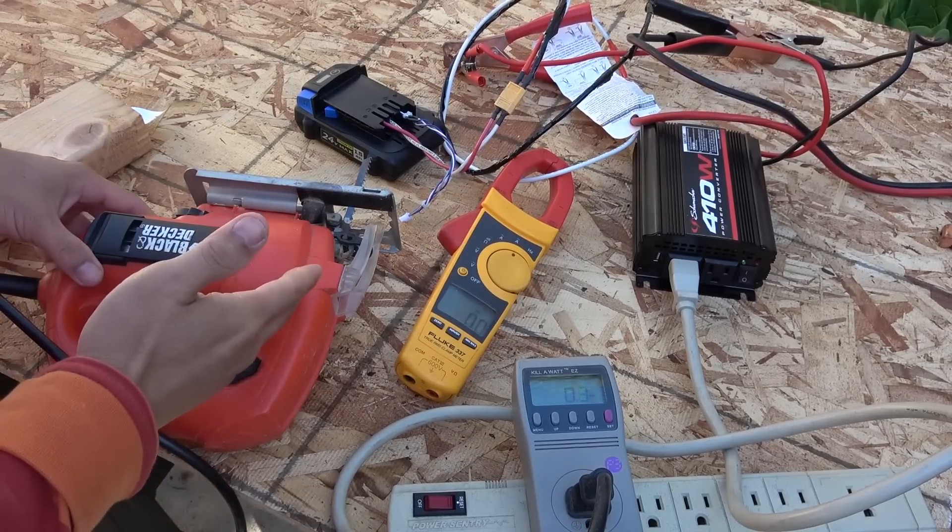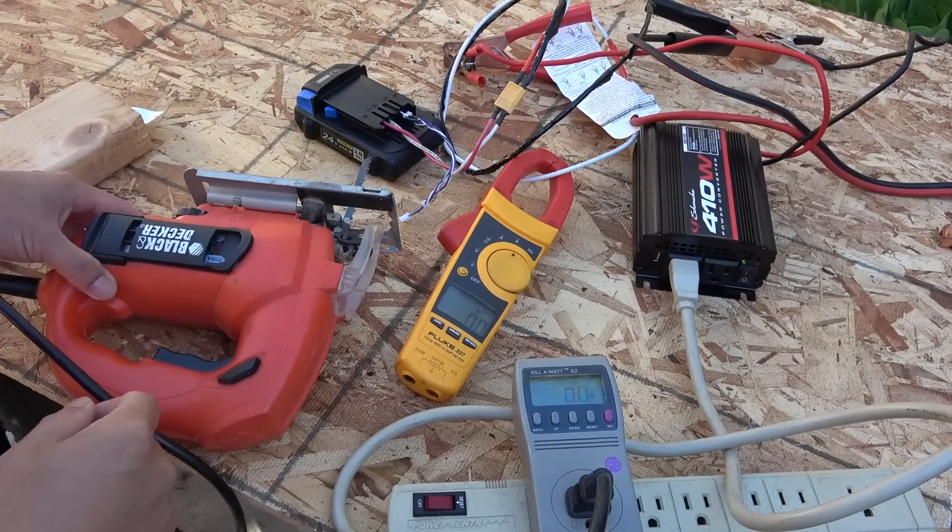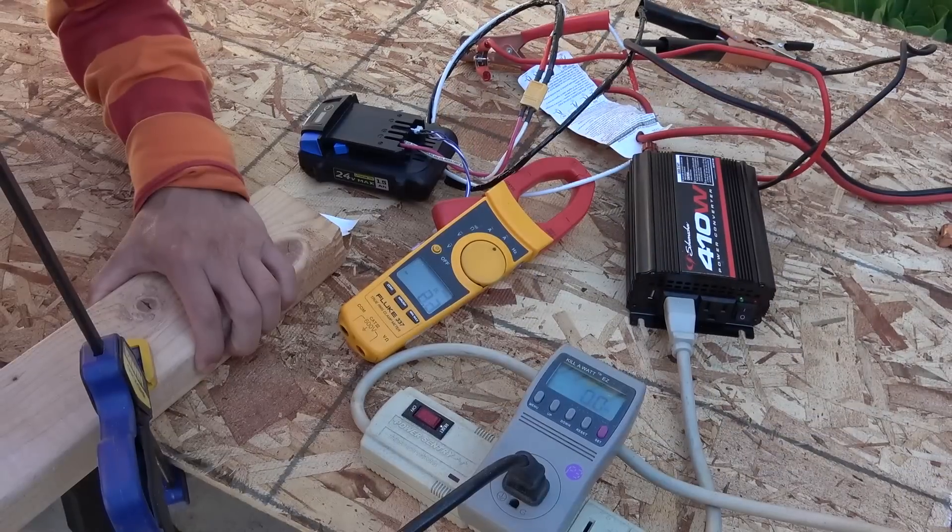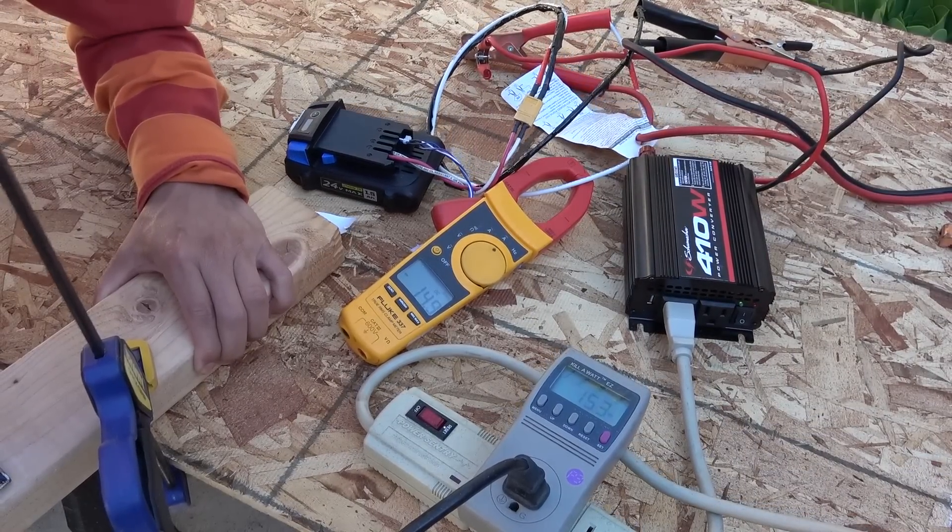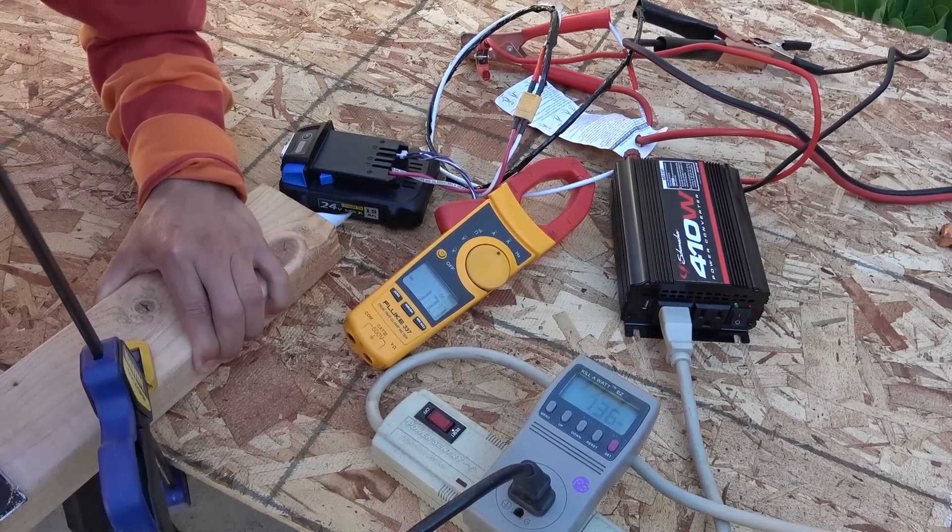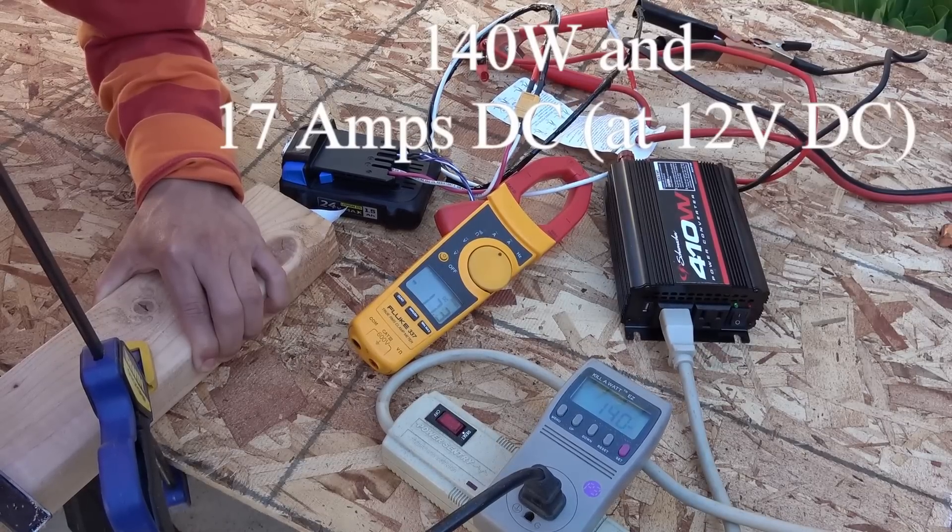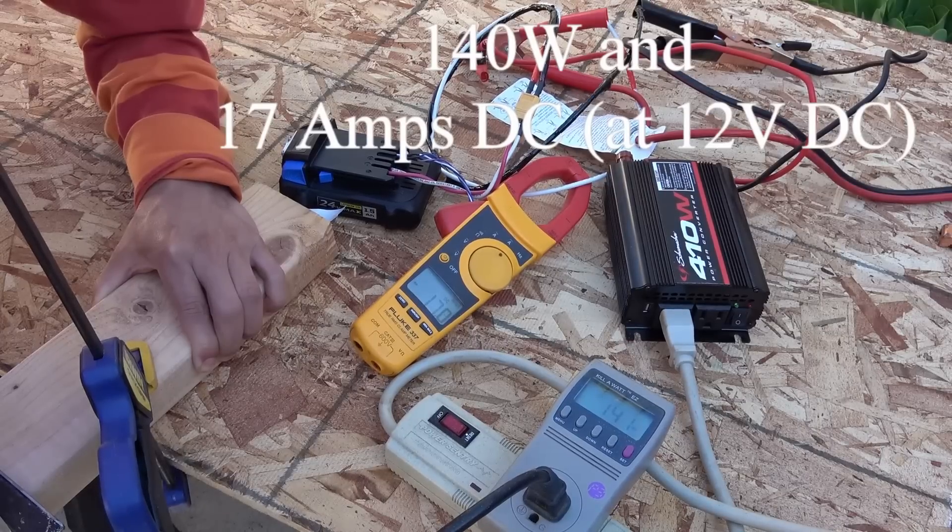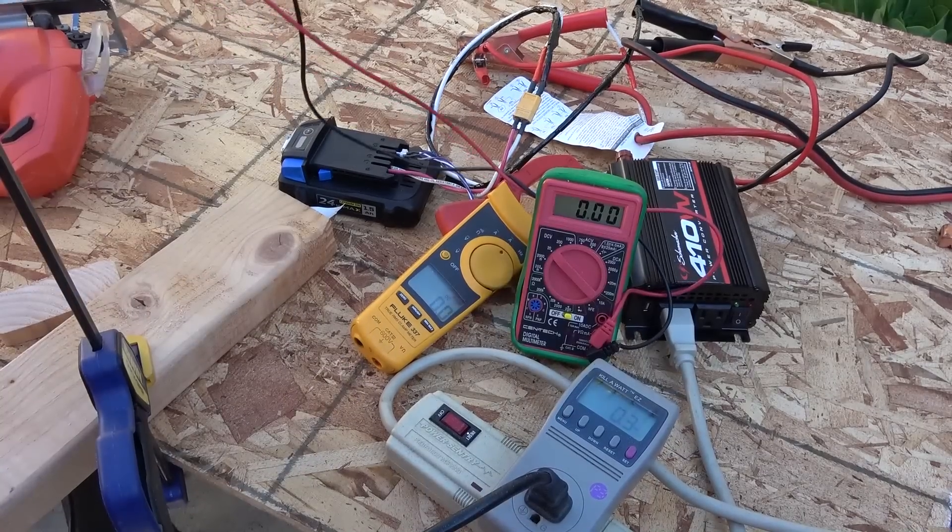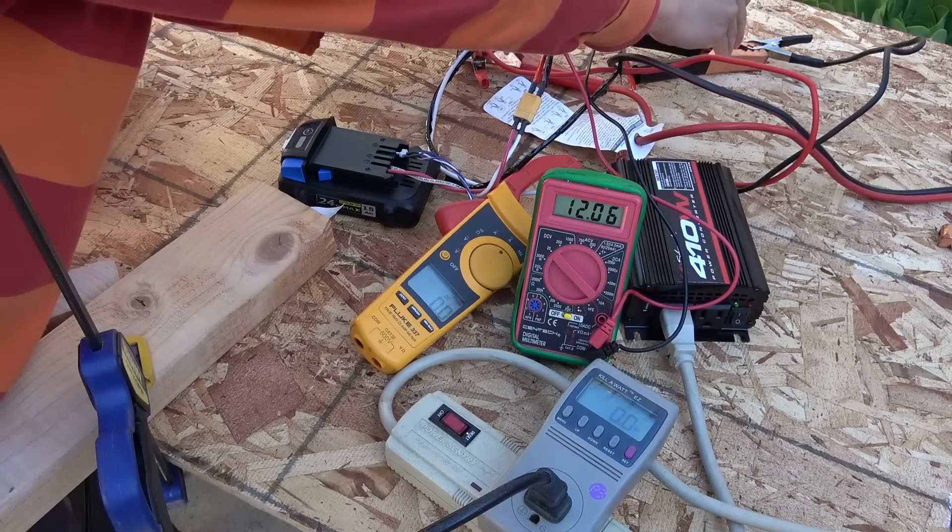So my next test, I got my jigsaw here plugged into the kilowatt outlet, which plugs into the inverter. And also I have my DC amp meter. I'm going to cut this piece of wood, 2x4, see how much power I can get. You see there, it works just fine. Let's check the battery voltage: 12.05 volts and rising.